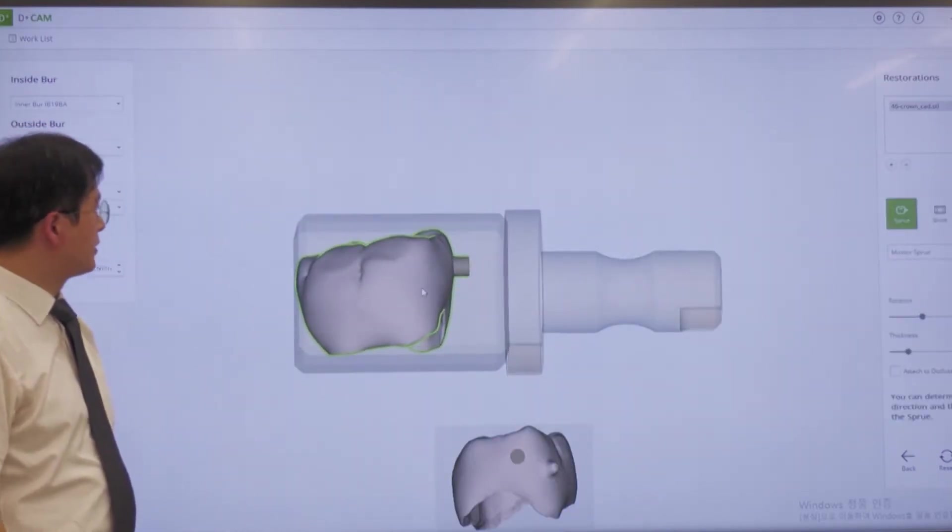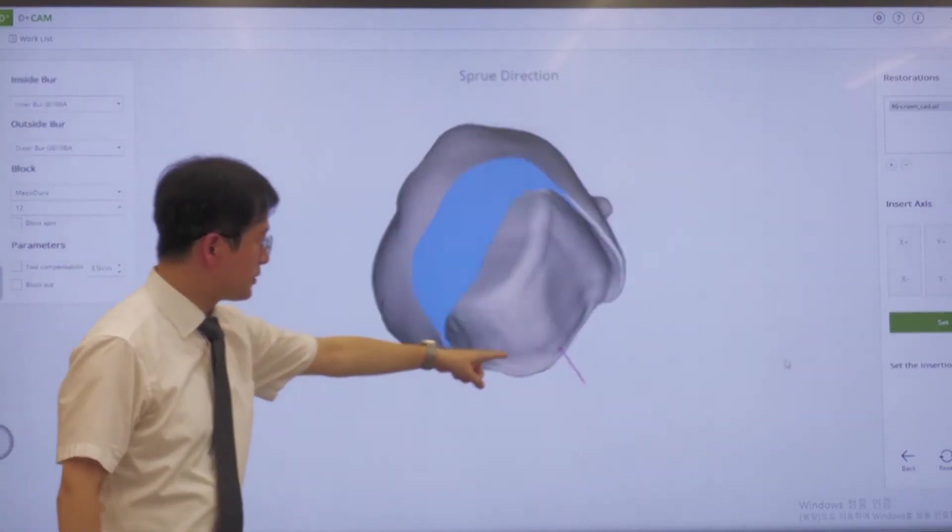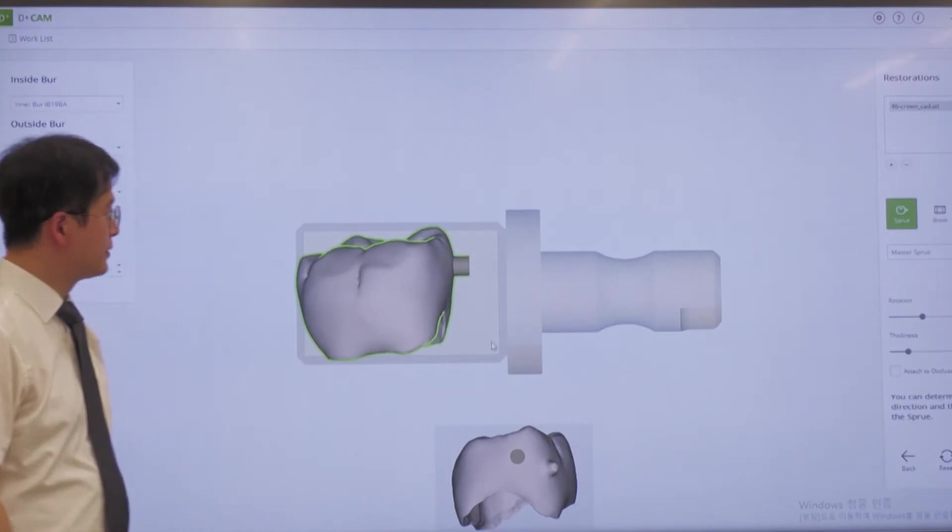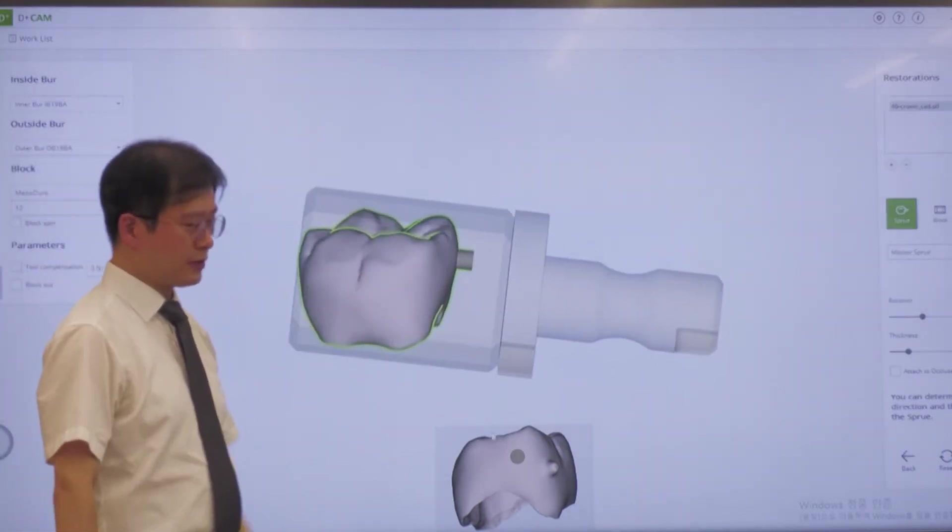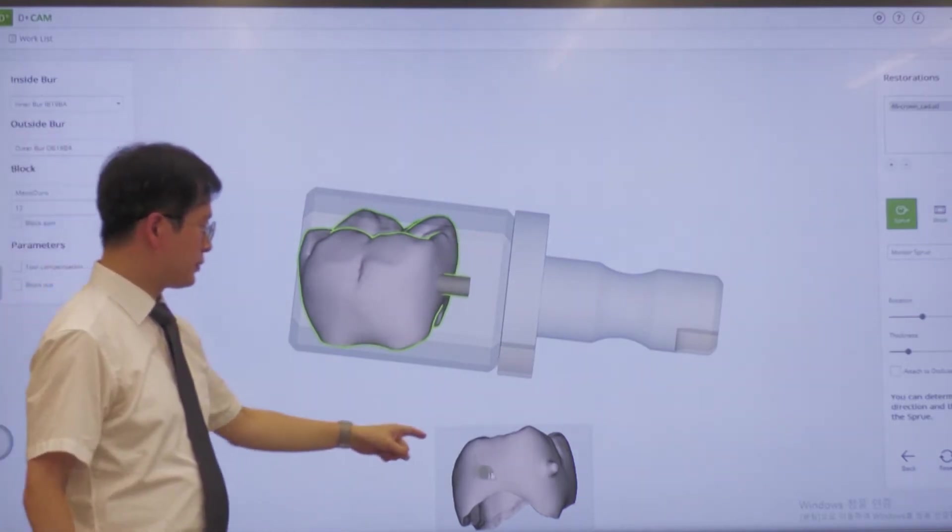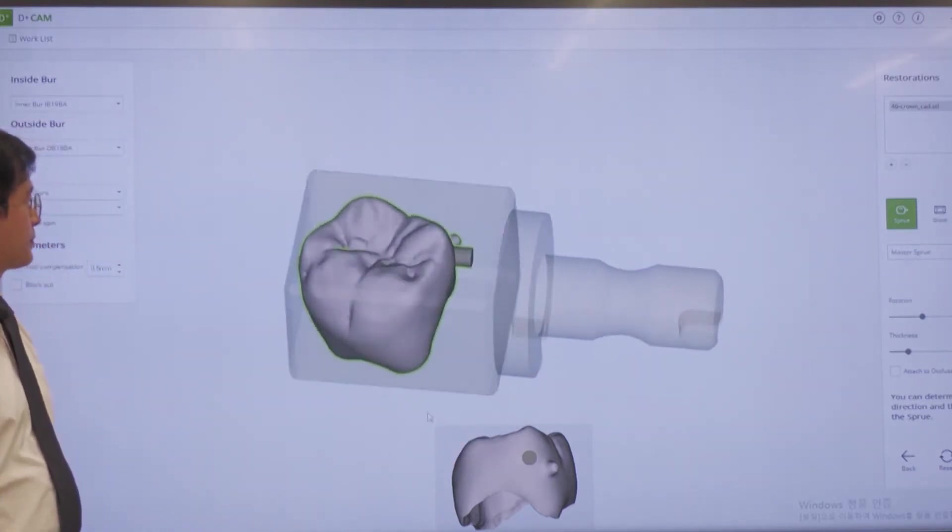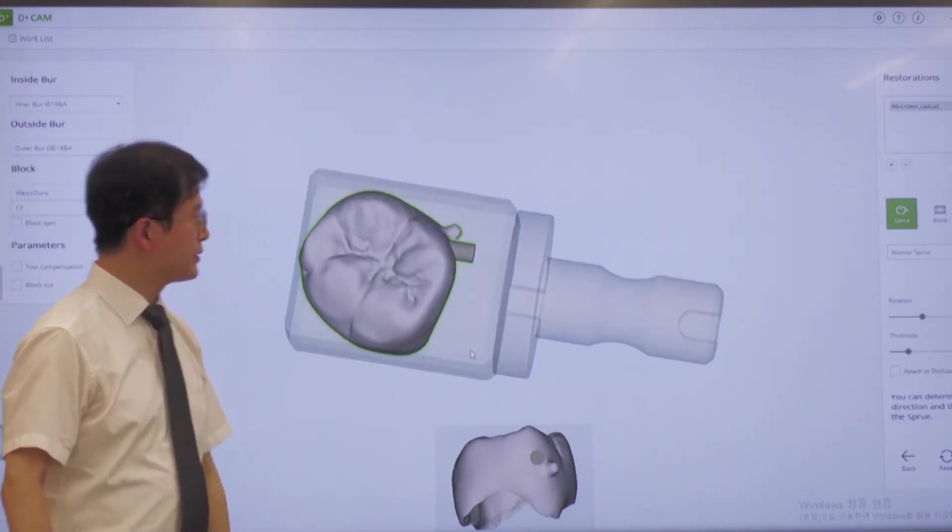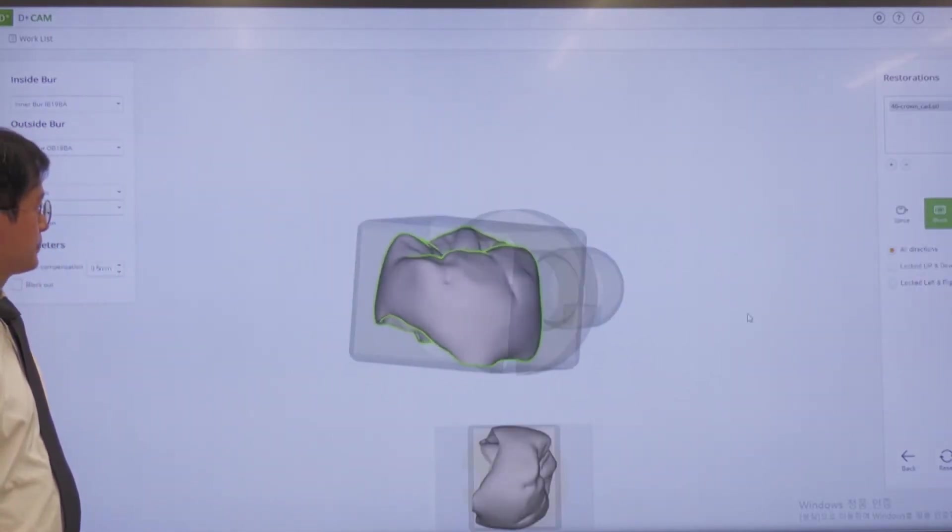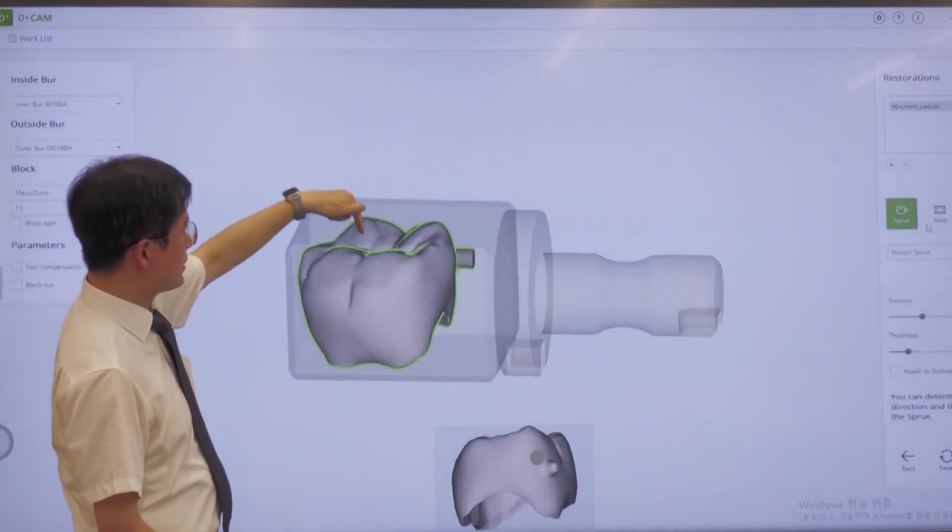This is the line, and we have to set the path of insertion line. We have to set the screw connection shape. We can move and select the best position. We can rotate the crown and set the point here. The milling machine cuts occlusal side and cavity side, and after we finish milling, this connection holds the whole milling restoration.